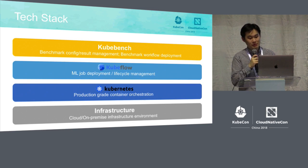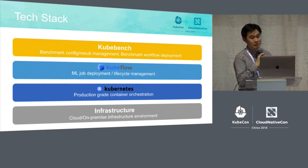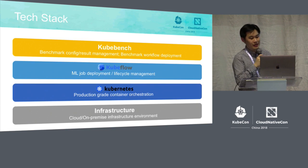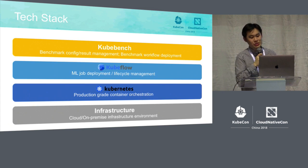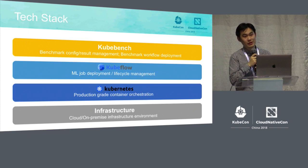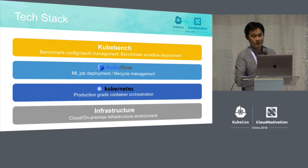Given all those requirements, here is the tech stack we chose. From the infrastructure side, we look at cloud-based infrastructures that are both public and on-premise private clouds. On top of that, we have Kubernetes for container orchestration, and on top of Kubernetes there is Kubeflow for deploying and managing the lifecycle of machine learning jobs. Kubebench adds a thin layer on top of Kubeflow that provides benchmark-specific functionalities, such as managing the configs and results of your machine learning jobs and developing the workflow for the benchmarks.